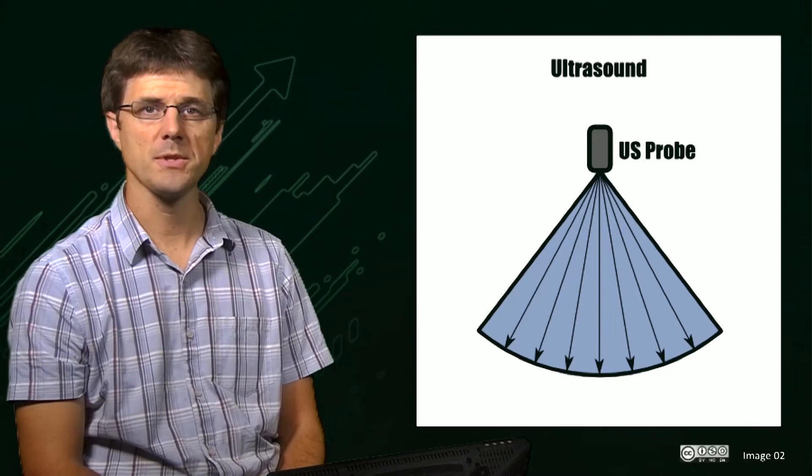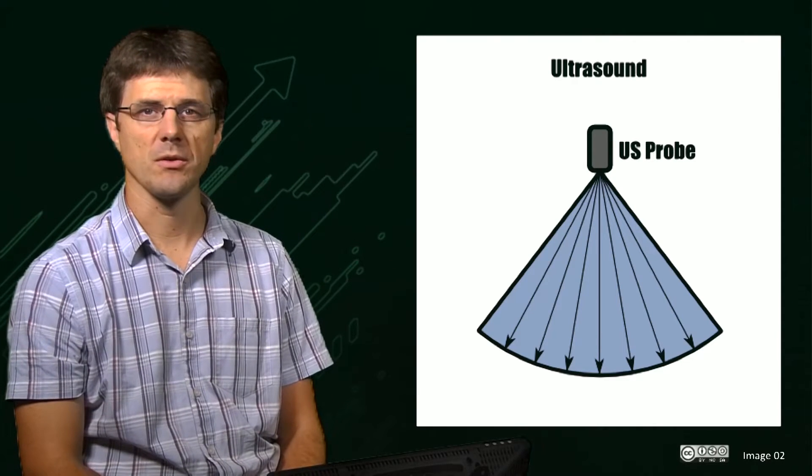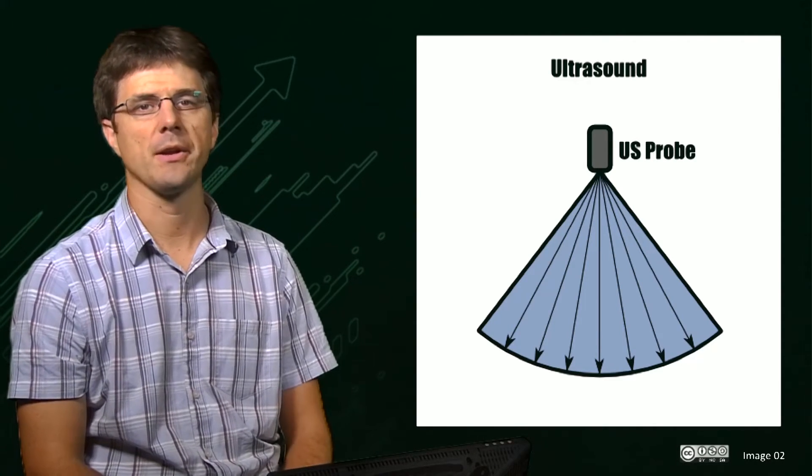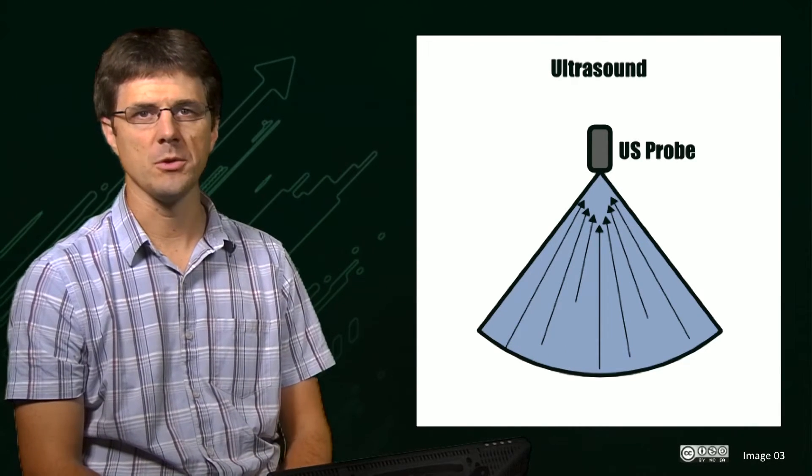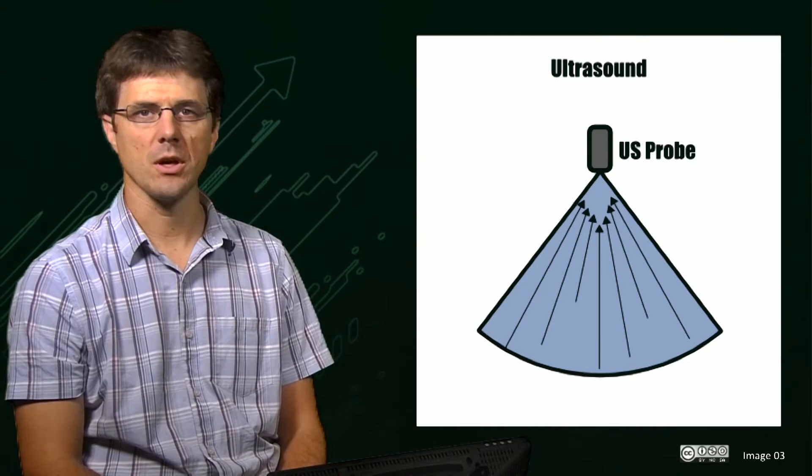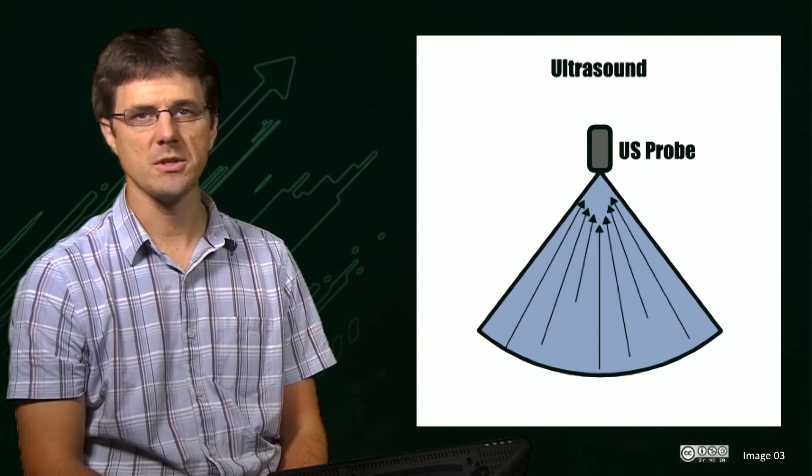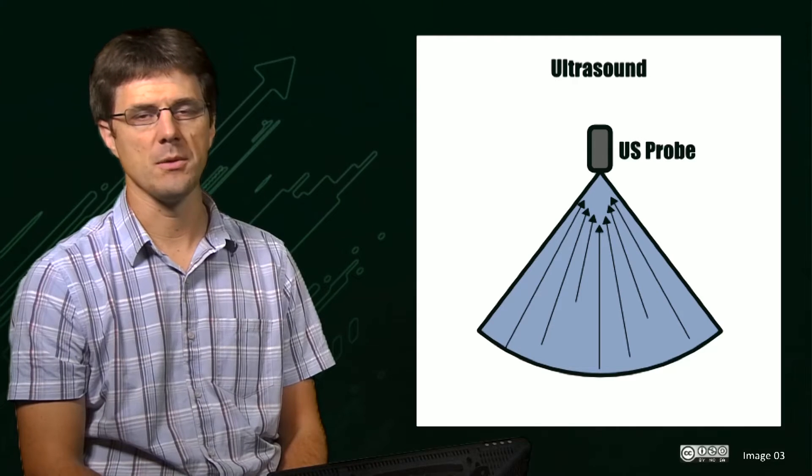In ultrasound, a probe is placed against some tissue and a focused beam of high-frequency sound energy is sent into the tissue. Echoes from obstructions throughout the image volume are then returned to the ultrasound probe and an image is formed as the beam is moved over the imaging area.